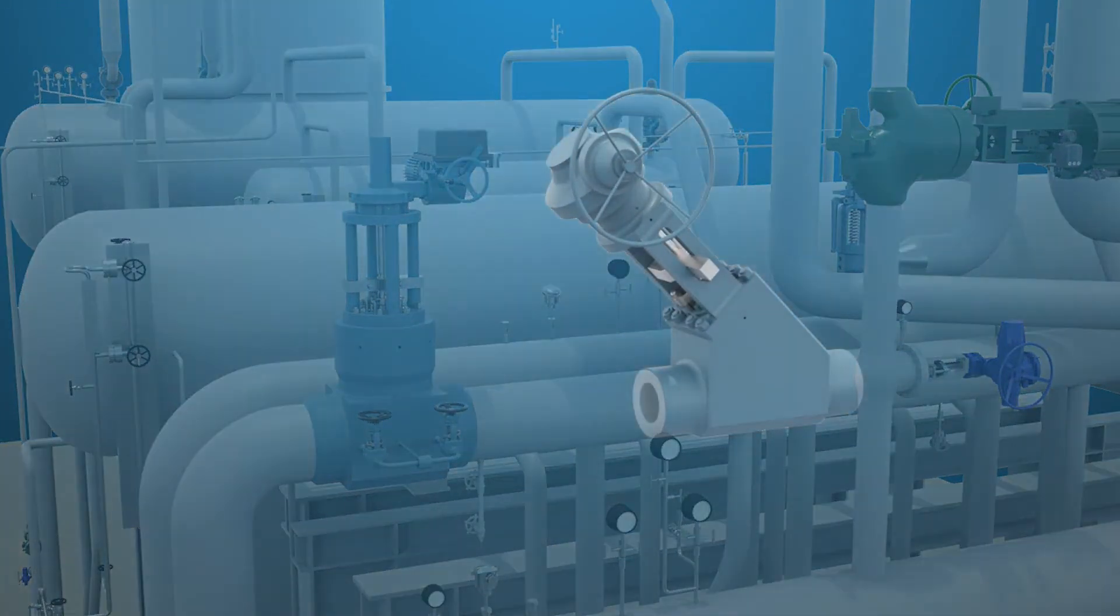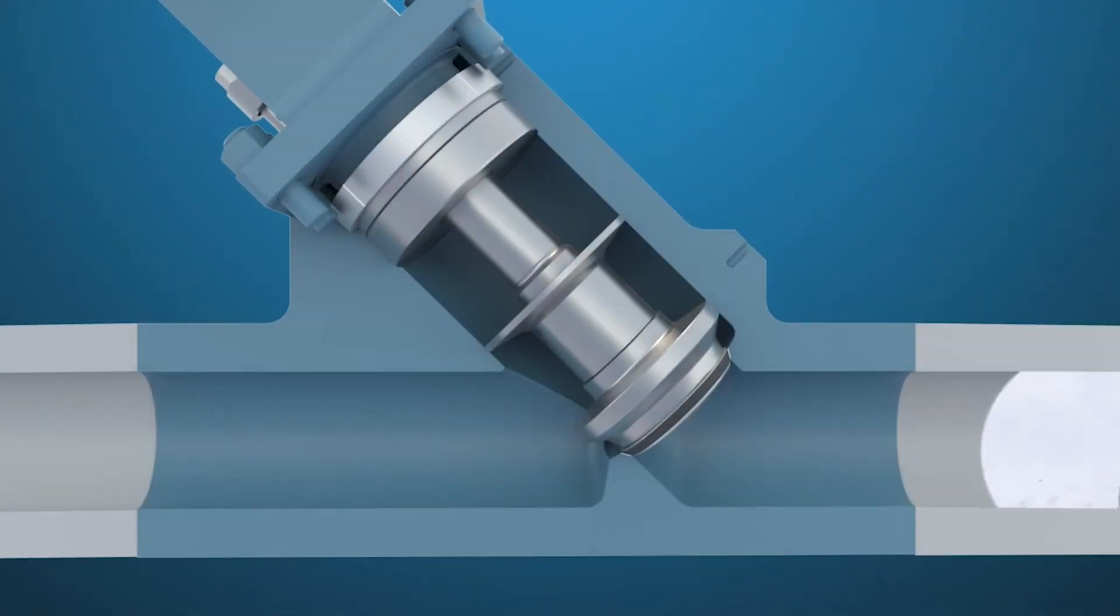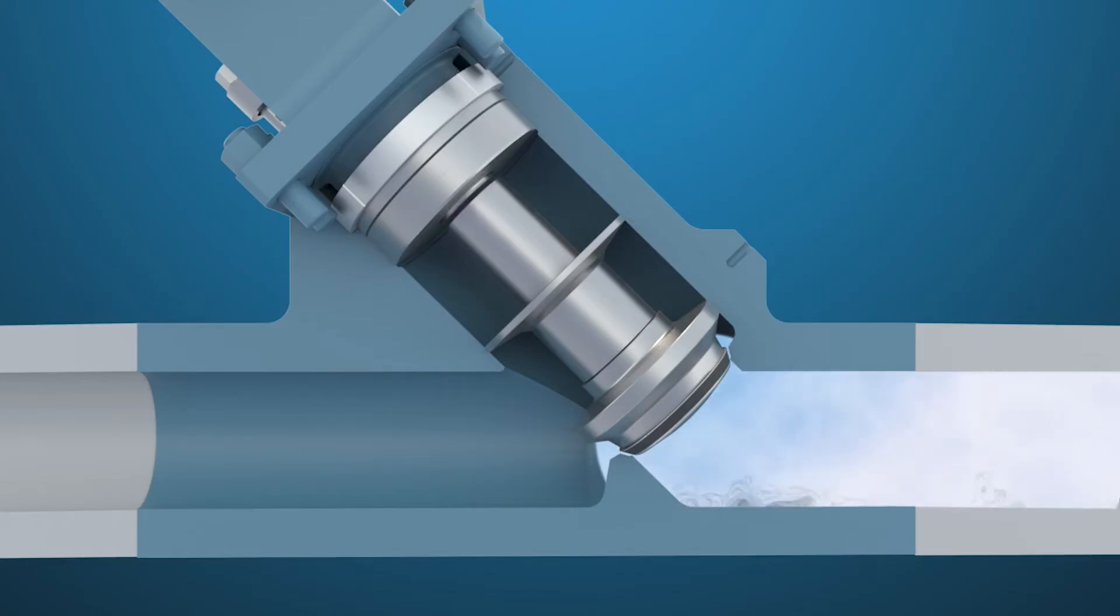The stop-check valve is used in power plants for safe operation of a HRSG. If a HRSG is offline or trips, the stop-check prevents the higher pressure from operating units to backflow into the offline HRSG. It combines the performance of an isolation and check valve into one unit.